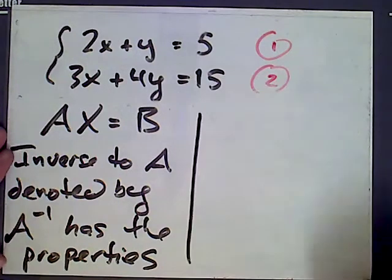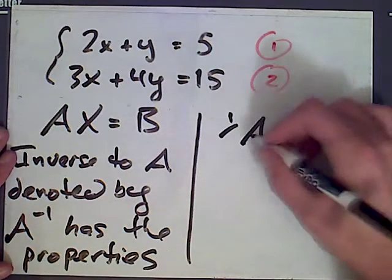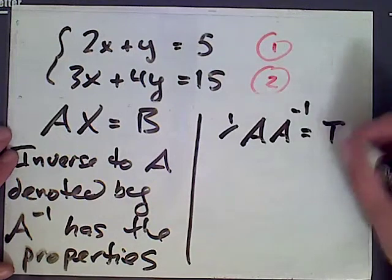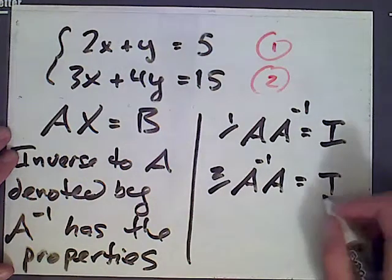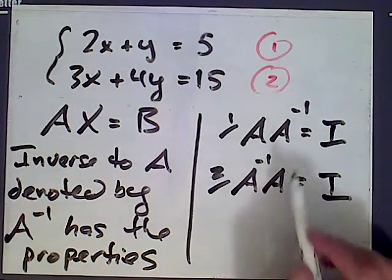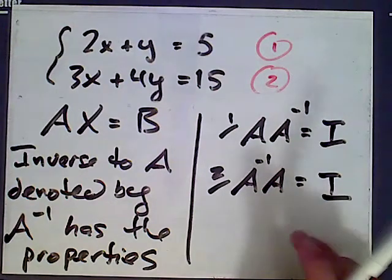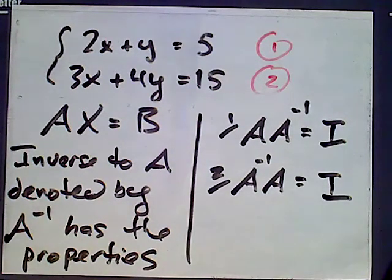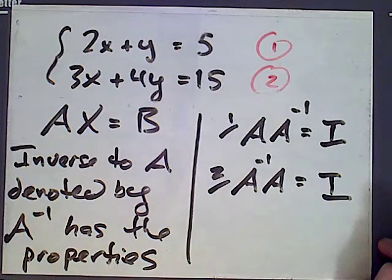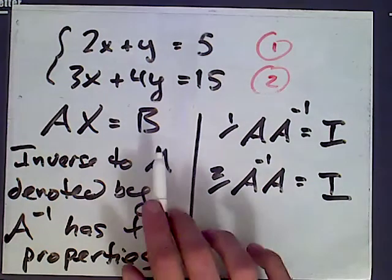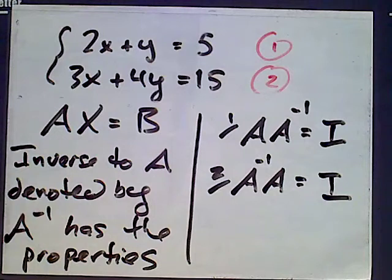One: A times A inverse is the identity matrix. It's necessary to make these two conditions because generally speaking matrix multiplication is not commutative, meaning the order that you multiply them in general matters. So for two matrices A and B, A times B might be different than B times A, so we need the two conditions here.